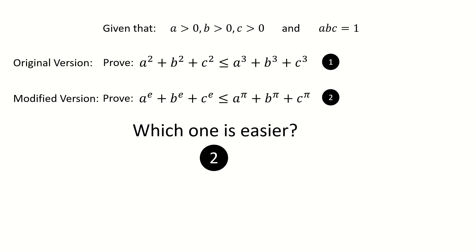If your choice is number 1, maybe you think for the original version, the power indices are integers, but for the modified version, the power indices are irrational, so the original version should be easier. This argument is reasonable. But, exactly due to this argument, the modified version should be easier.